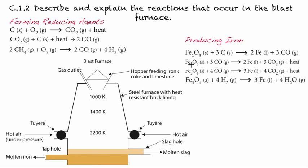Here we just have two different iron oxides. The last equation shows what happens if we put in methane, and how hydrogen works as a reducing agent. All of those reactions have in common that they produce liquid iron.